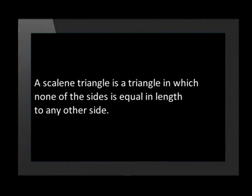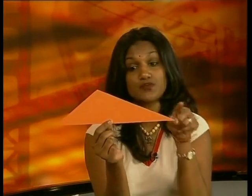I have already cut out a scalene triangle. Do you remember how I could confirm that this is a scalene triangle? A scalene triangle is defined as a triangle in which none of the sides is equal in length to any other side. So to confirm this, all I would have to do is measure the sides and check that all the sides are different lengths.